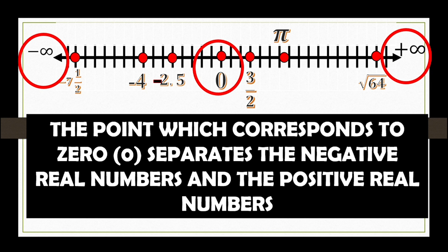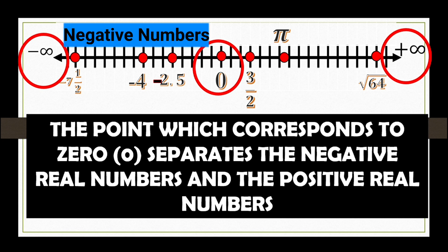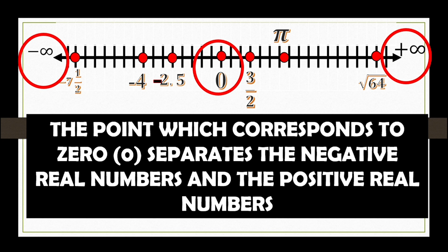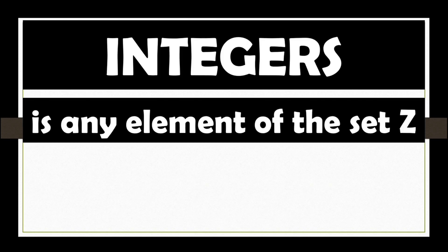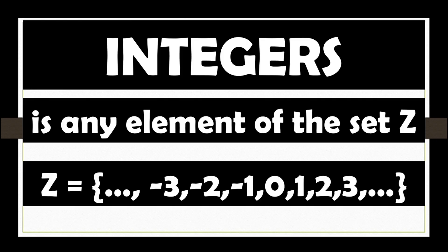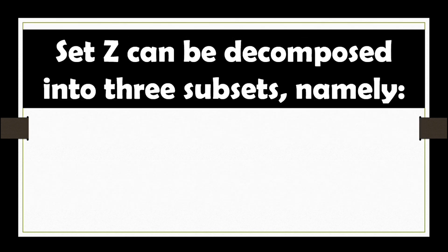So, the numbers that are present on the left side of our 0 are negative real numbers, while those numbers that are present on the right side of our 0 are the positive real numbers. Integers. The set of integers is a subset of real numbers. It is any element of the set Z. Set Z consists of ellipses, negative 3, negative 2, negative 1, 0, 1, 2, 3, and ellipses. Set Z can be decomposed into three subsets.